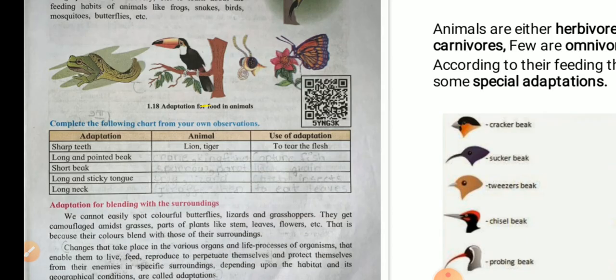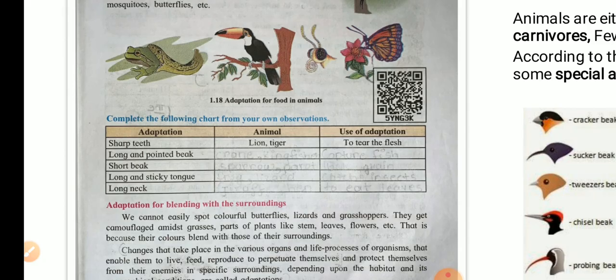Let us complete this chart from your own observations: the adaptation, the animal and the use of adaptation. Sharp teeth, for example lion and tiger, are used to tear the flesh. Long and pointed beak, in case of kingfisher and crane, to catch fish. Short beak, for example sparrow and crow, to pick up grains and seeds. Long and sticky tongue, in case of a frog, to catch insects. Long neck, for example ostrich and great Indian bustard, to spot the predators from far away in the wild.